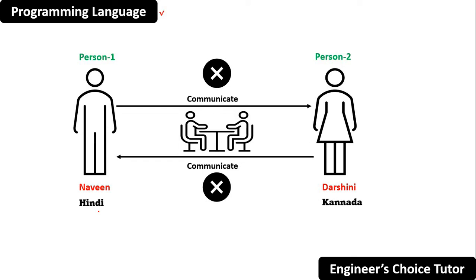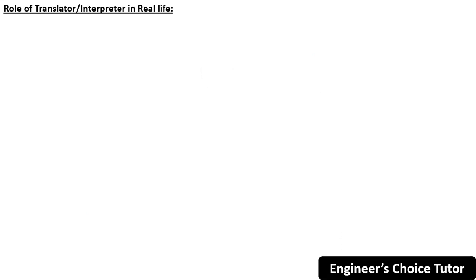But they are eager to talk with each other. So in order to perform communication, they have to arrange one person who knows both languages — Hindi and Kannada. That person is called a translator or interpreter. So we are going to see about the role of a translator or interpreter in real life.